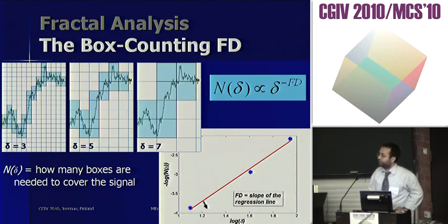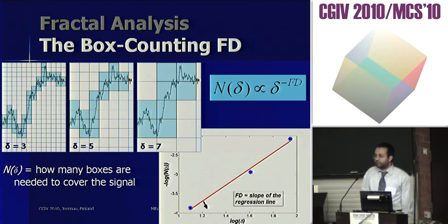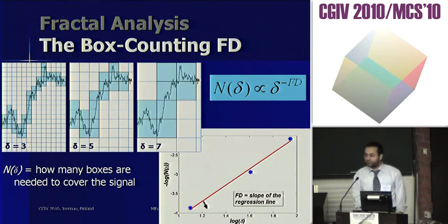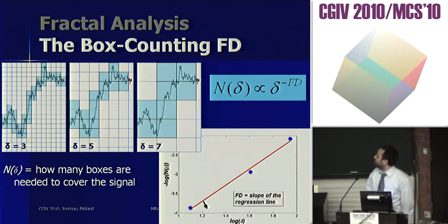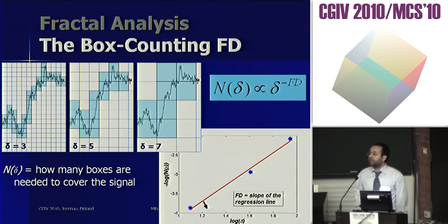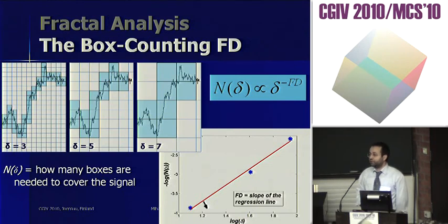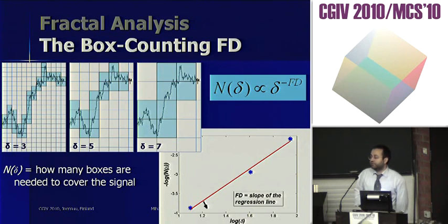I'll briefly remind how the box-counting fractal dimension is computed. The fractal dimension is a measure of the complexity of a fractal object. For a one-dimensional signal, you cover the signal with boxes of size delta and count how many boxes it takes to cover it. You repeat this process for several box sizes. In log-log space, for a pure fractal, N(delta) as a function of delta should be a constant, and you estimate the fractal dimension as the slope of the regression line through the points of log N(delta) versus log delta.